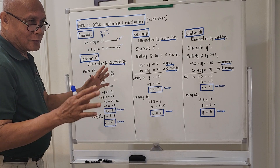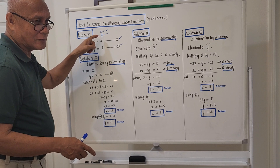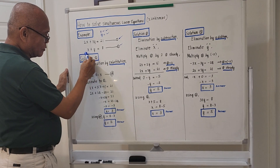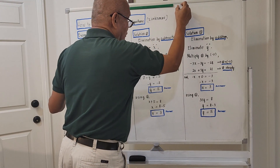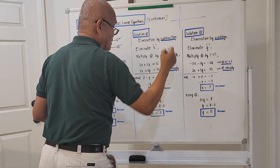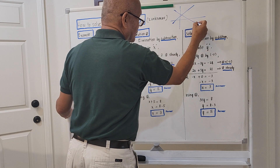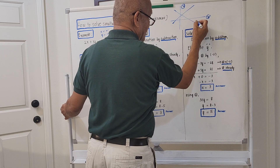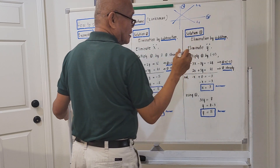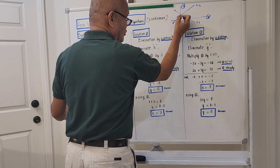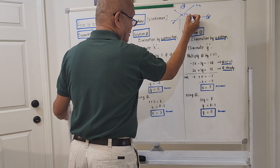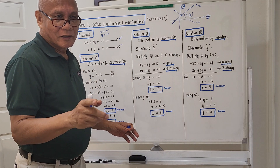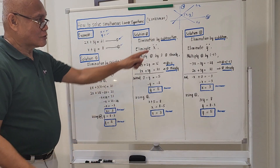I will show you later on why there is only one value for x and one value for y. Because the first equation is actually a straight line and the second equation is also a straight line. So if you try to draw two straight lines — this might be the first straight line and this is the second straight line — this is x and this is y. What we are solving is actually the intersection of the two lines.